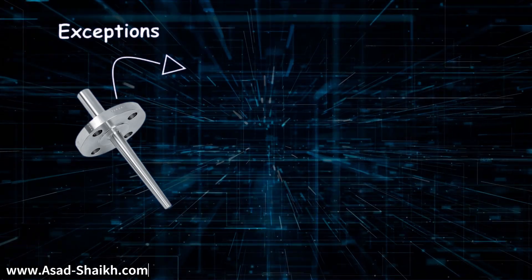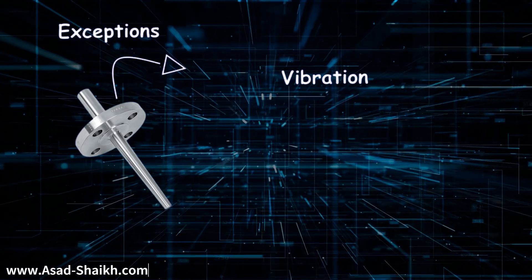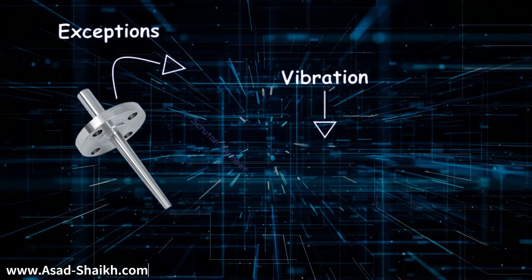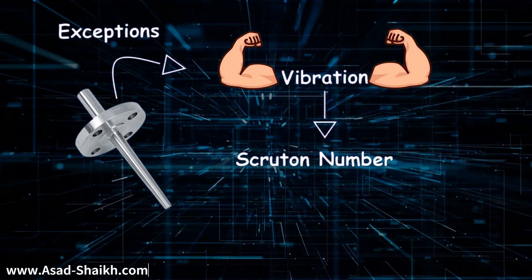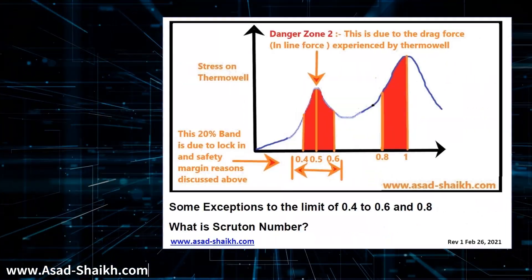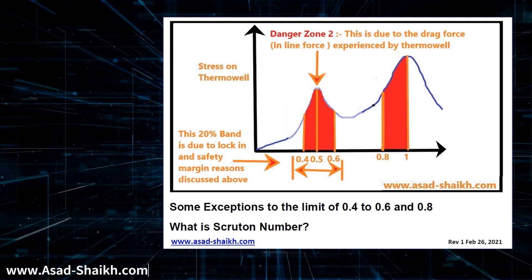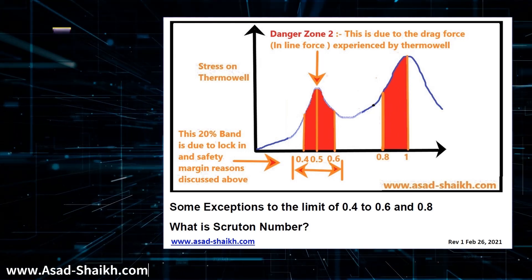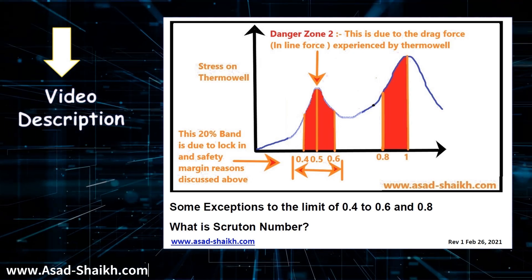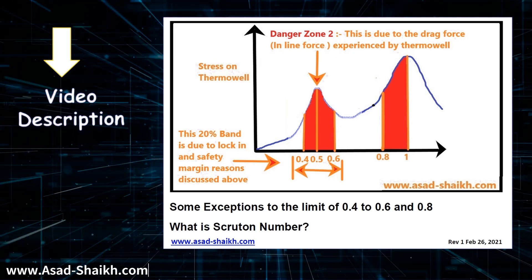There are certain exceptions with which you can supersede these two criteria as per the ASME PTC standard. What if the thermowell has the capacity to dampen the vibrations by itself? This is calculated with a number called the Scruton number. The higher the Scruton number, the better the vibration-resistant capacity of the thermowell. To learn about the Scruton number and the full summary of the wake frequency calculation, a PDF guide is available — the link is given in the comment section and in the video description.